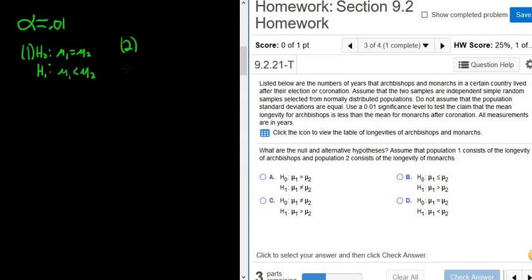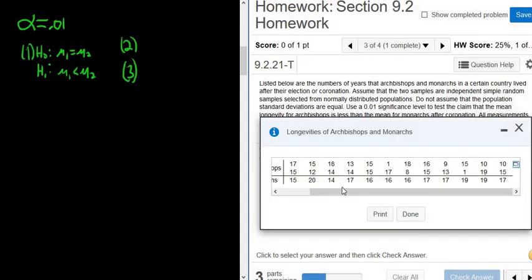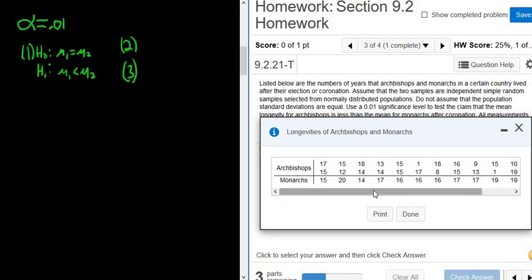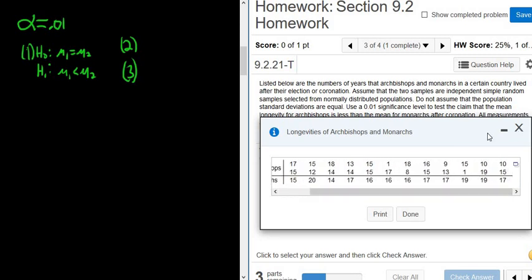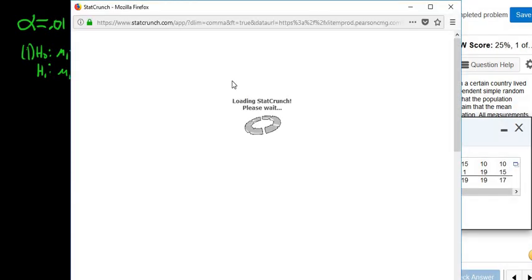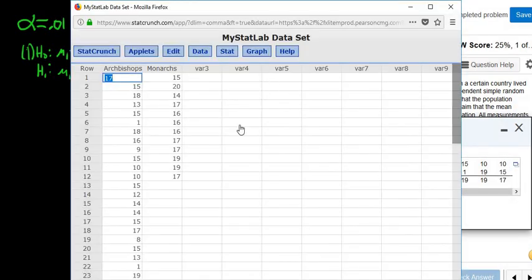Now, steps 2 and 3 are done entirely in StatCrunch. They give us no summary statistics, like they don't give us the mean here, they don't give us the standard deviation. So we're just going to use t in this problem because they don't give us population standard deviations. So if you click this icon, there's all the data. And then you scroll over here, it's this icon here. And then click this little box and click open in StatCrunch. It types all the data into StatCrunch for you.